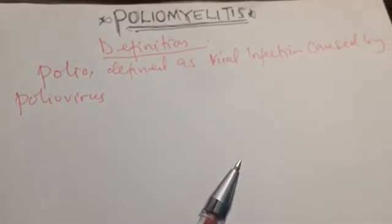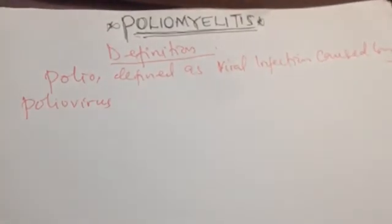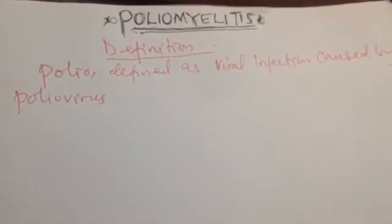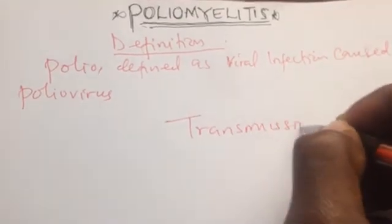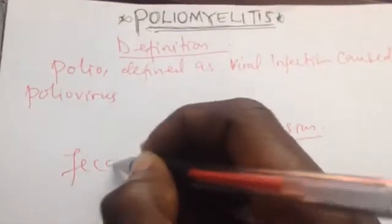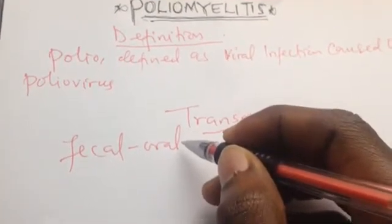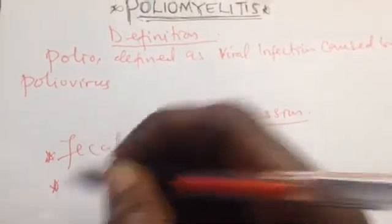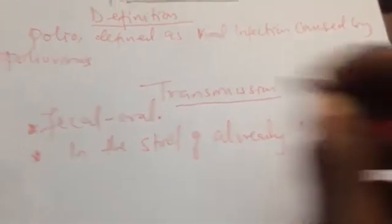Since poliomyelitis is a viral infection, let us see how this poliovirus is transmitted from one person to another. The important mode of transmission is fecal-oral transmission. What I mean by fecal-oral transmission is: if a person is infected with the virus, the virus is going to be shed into his stool — the feces of an already infected person.